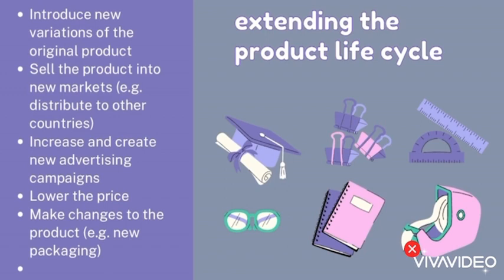There are many steps to avoid the decline stage, known as the extension of the product lifecycle. Methods to extend the product lifecycle include: introducing new variations of the original product with more appealing features, selling the product in new markets like distributing to other countries, creating new advertising campaigns, lowering the price to encourage consumers to buy the product, and making changes to the product such as new packaging.